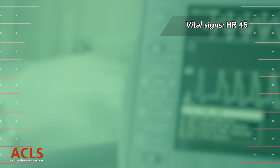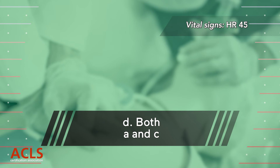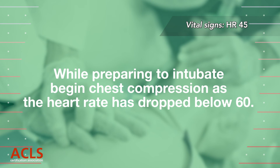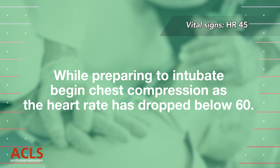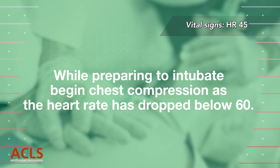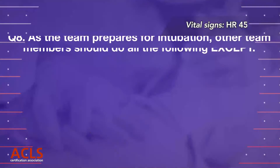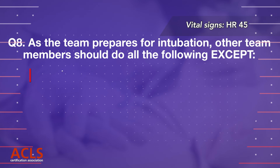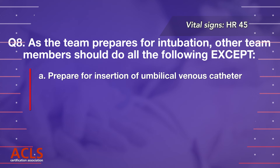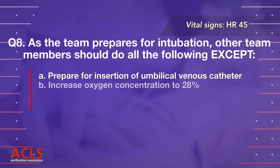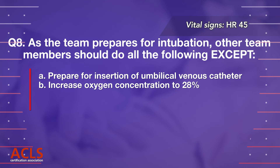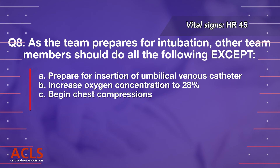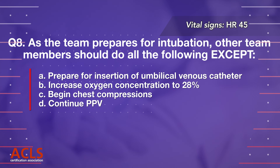Correct answer: D. Both A and C. While preparing to intubate, begin chest compressions as the heart rate has dropped below 60. Question 8: As a team prepares for intubation, other team members should do all of the following except: A. Prepare for insertion of umbilical venous catheter, B. Increase oxygen concentration to 28%, C. Begin chest compressions, D. Continue PPV.